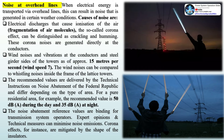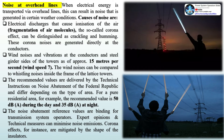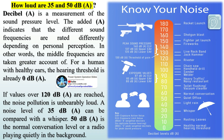Noise at overhead lines: when electrical energy is transported via overhead lines, this can result in noise generated in certain weather conditions. Causes of noise include electrical discharges that cause ionization of the air and fragmentation of the air molecules — the so-called corona effect — which can be distinguished as crackling and humming. These corona noises are generated directly at the conductors. Wind noises and vibrations at the conductors and steel girder sides of the towers occur at approximately 15 m/s wind speed. The recommended values are delivered by the technical instructions on noise abatement and differ depending on the type of area. For a pure residential area, the recommended value is 50 dBA during the day and 35 dBA at night.